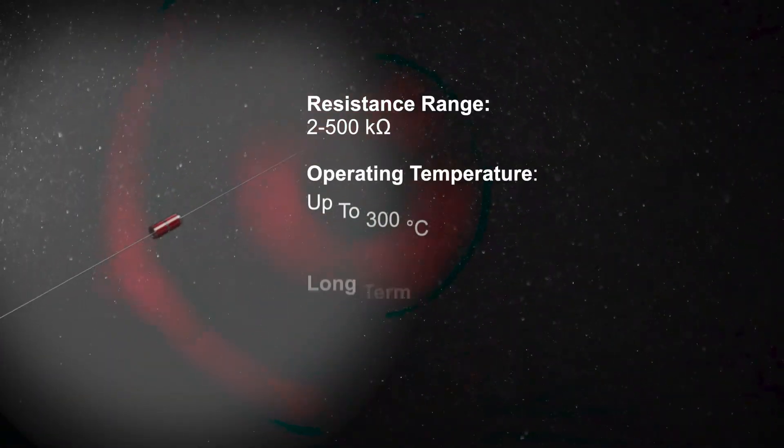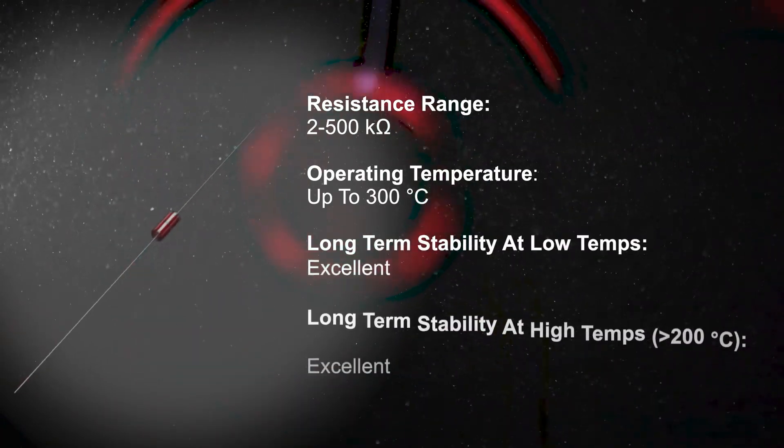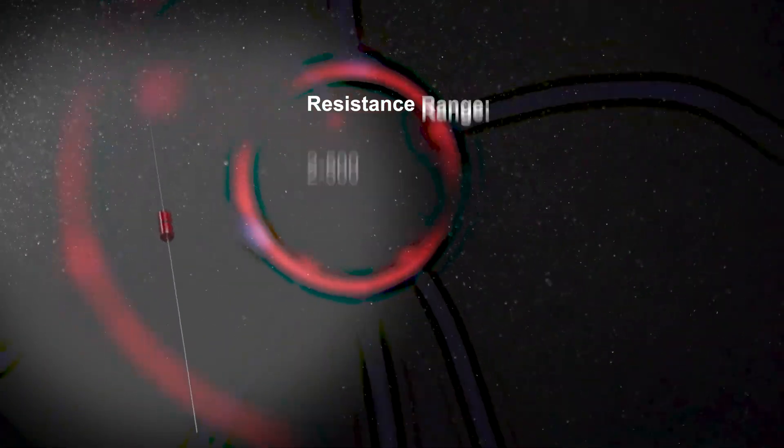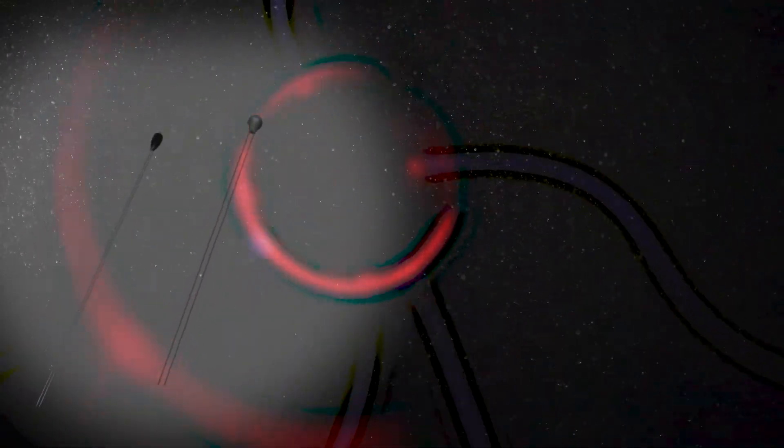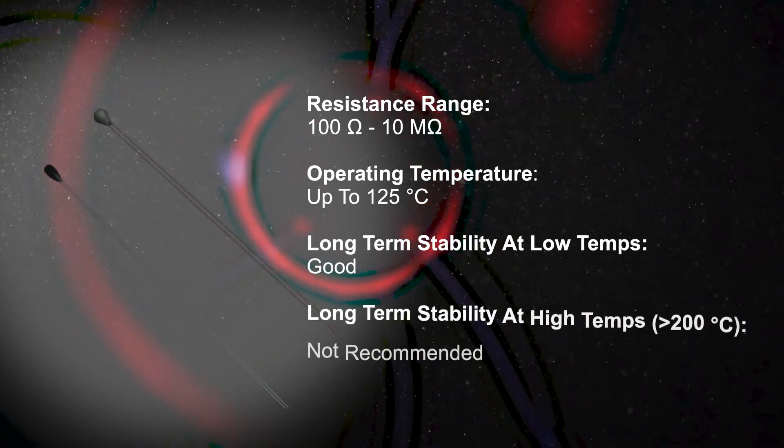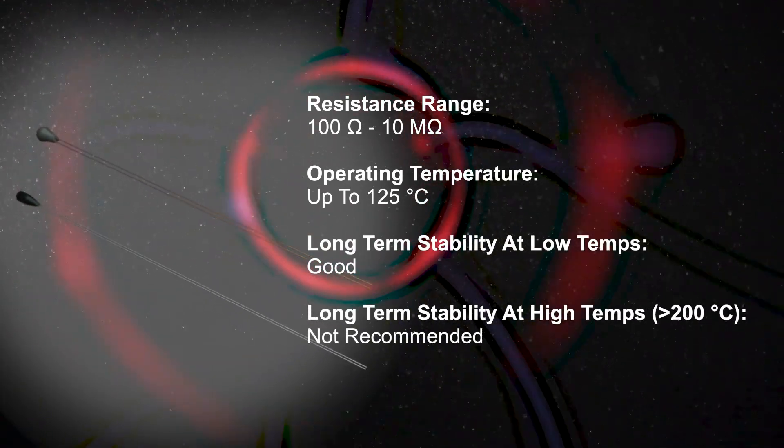Glass-encapsulated thermistors offer the most ruggedization with operating temperatures up to 300 degrees Celsius and much more long-term stability at high temperatures. Epoxy or polyimide encapsulated discrete NTC thermistors have operating temperatures up to 125 degrees Celsius, but are a cost-effective option.